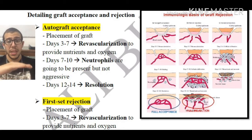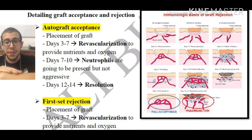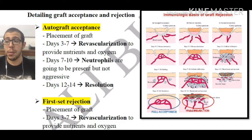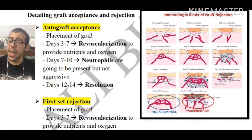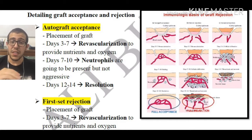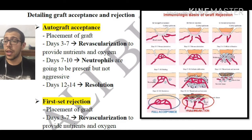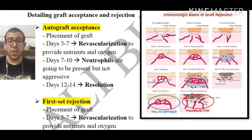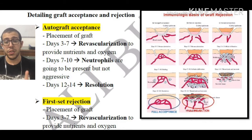In autograft acceptance, first there's going to be the placement of the graft — the tissues, organs, or cells that I want to incorporate into my body. Days 3 to 7, revascularization is going to be taking place, and this is stable across all the different grafts. Revascularization is very important because without blood vessels there are no nutrients and no oxygen to supply to these cells, and therefore they're going to be dying.